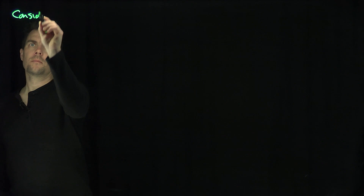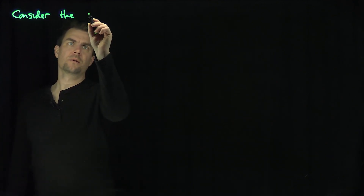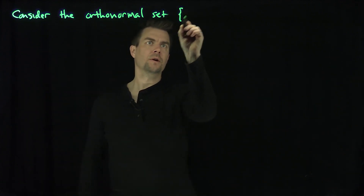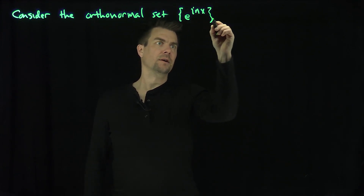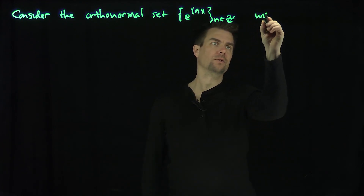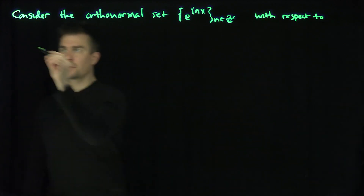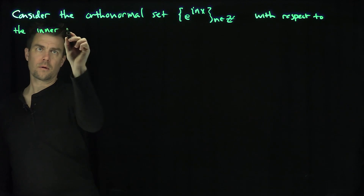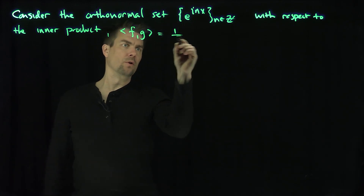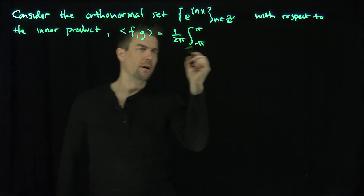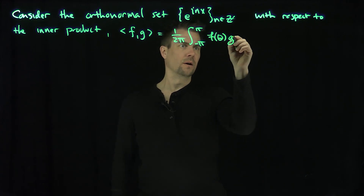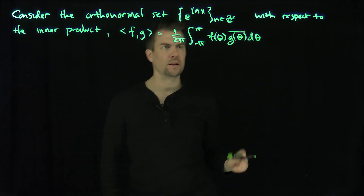Let's consider the orthonormal set of functions: e to the i n x for n in the integers. These are orthogonal on the interval negative pi to pi with respect to the inner product f inner product g equals 1 over 2 pi, the integral from negative pi to pi of f of theta times g of theta bar, d theta.